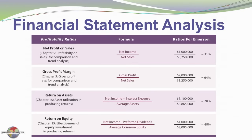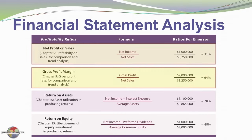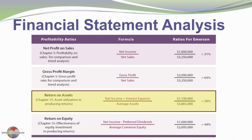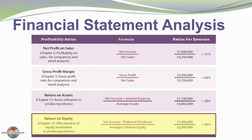We also have profitability ratios. Net profit on sales, introduced in Chapter 5, is net income divided by net sales, often used for comparing one business to another. Gross profit margin is gross profit divided by net sales, comparing that intermediate income number before operating expenses. Return on assets is net income plus interest expense divided by average assets — this company is generating a 28% return on its average invested assets. Return on equity is net income less preferred dividends divided by average common equity, and Emerson appears to be doing quite well with a 48% return on equity.